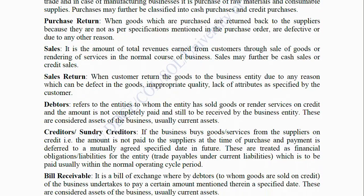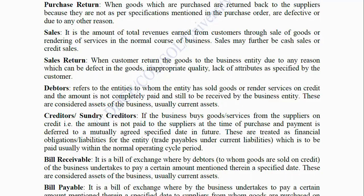Debtors: It refers to entities to whom the business has sold goods or rendered services on credit, and the amount is not completely paid and is still to be received by the business entity. These are considered current assets of the business. Creditors (Sundry Creditors): If the business buys goods or services from suppliers on credit — that is, the amount is not paid to the supplier at the time of purchase and payment is deferred to a mutually agreed future date — these are treated as financial obligations or liabilities for the entity, i.e., trade payables under current liabilities, to be paid usually within the normal operating cycle period.